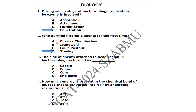The side of the sheath attached to the head region in bacteriophage is termed as the collar. How much energy is present in the chemical bond of glucose that is converted into ATP?